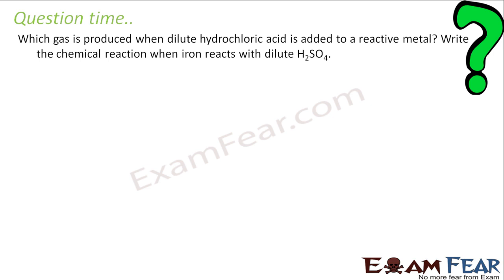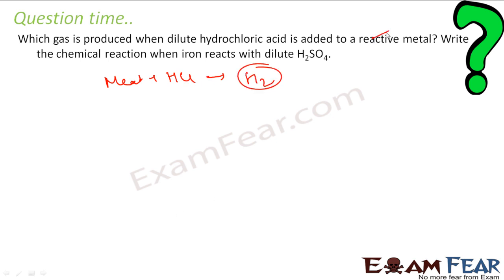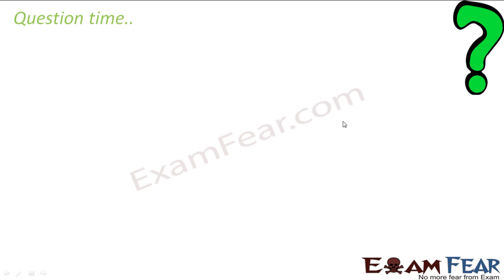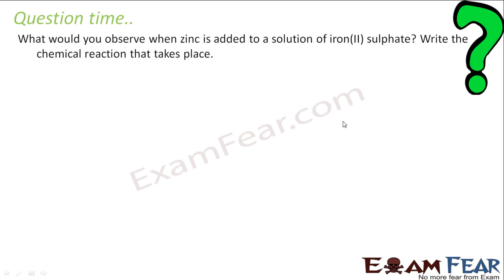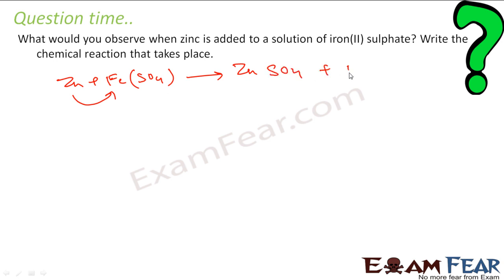Which gas is produced when dilute hydrochloric acid is added to a reactive metal? Metal plus dilute HCl gives hydrogen gas — that part is solved. The chemical reaction for iron with H2SO4: Fe + H2SO4 → FeSO4 + H2. What will you observe when zinc is added to iron sulfate solution? Since zinc is more reactive than iron, zinc displaces iron: Zn + FeSO4 → ZnSO4 + Fe.